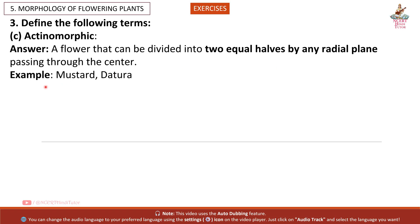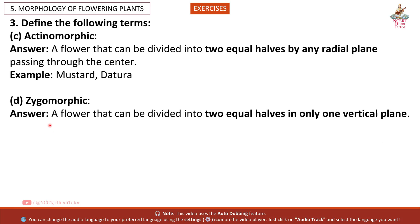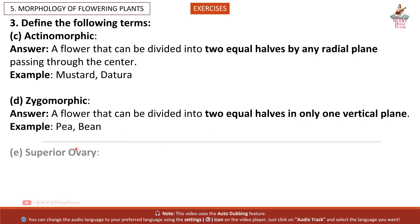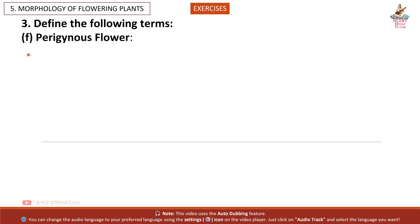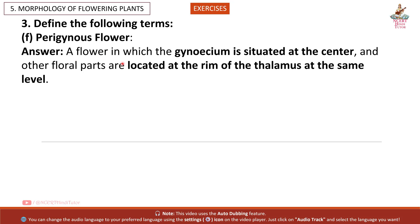(d) Zygomorphic: a flower that can be divided into two equal halves in only one vertical plane. Example: pea, bean. (e) Superior ovary: when the gynoecium (ovary) is at the highest position and all other floral parts are attached below it. Example: mustard, brinjal.